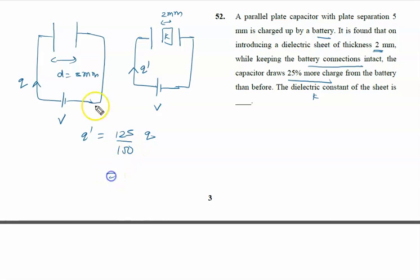Q is known as CV. Initial situation, so we can say 125 by 100, that's 5 by 4. You can say 5 by 4 into Q. So we all know very well Q equals CV. So right hand side we are writing 5 by 4. Initially, capacitance is known as epsilon naught A upon D into voltage.